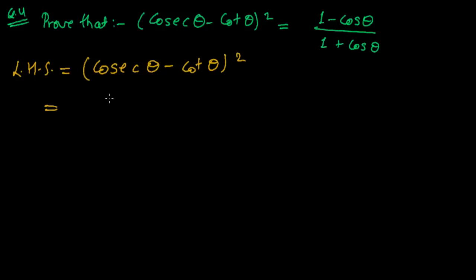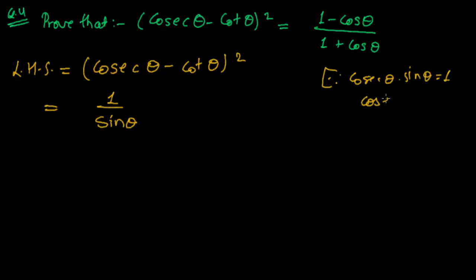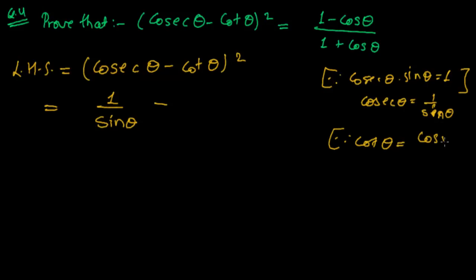Cosec theta equals 1 upon sine theta — we have learned previously that cosec theta multiplied by sine theta equals 1, therefore cosec theta equals 1 upon sine theta. And cot theta — we know that cot theta is the ratio of cosine theta to sine theta — so I am writing cot theta as cosine theta upon sine theta. And it's whole square.